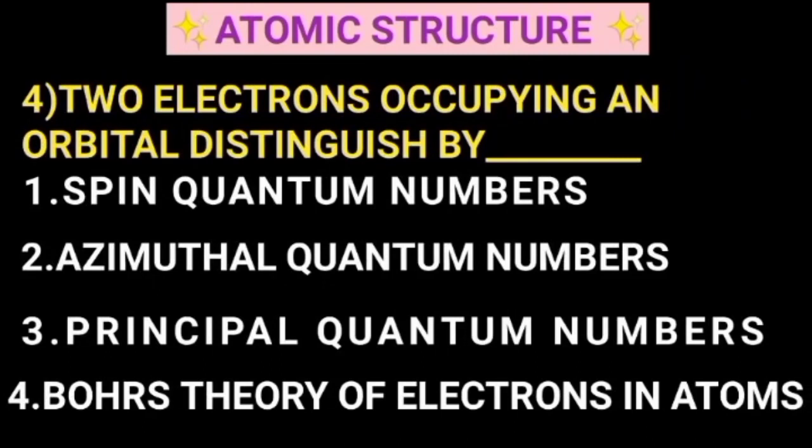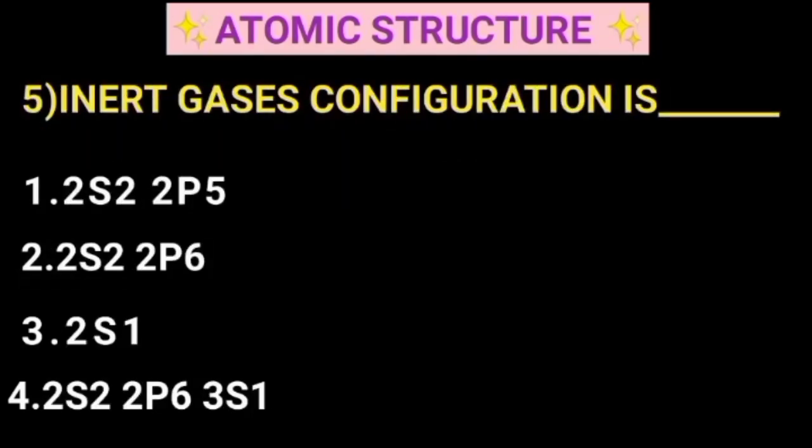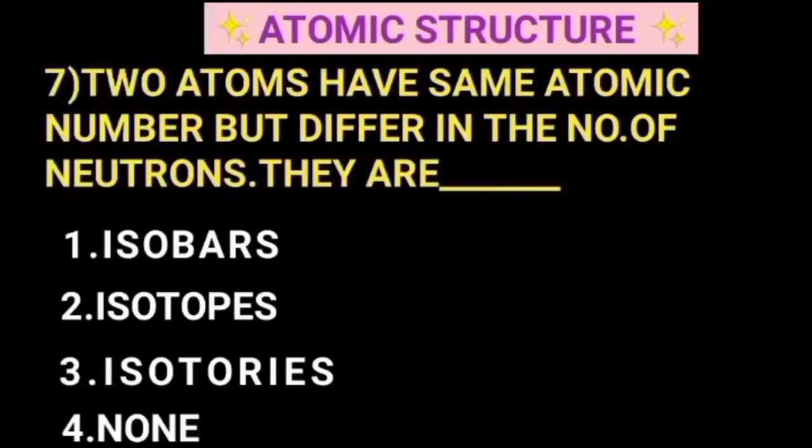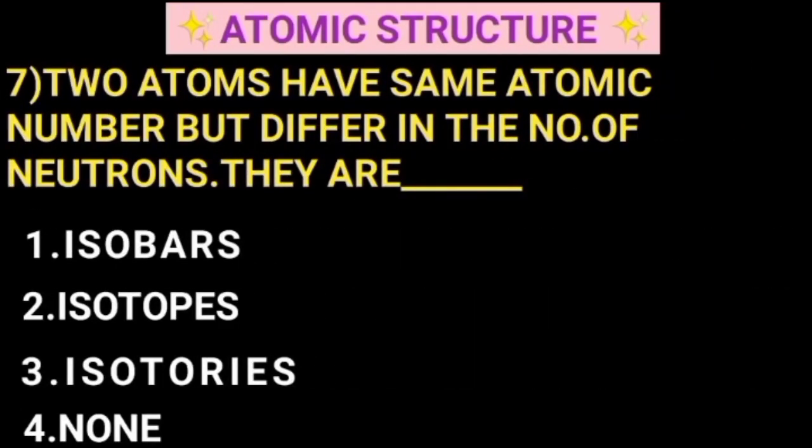Two electrons occupying an orbital distinguished by. The most repeated question of the inert gas configuration is of the following. When electrons jump from 4s to 3d orbital, energy is absorbed, released, unchanged. Two atoms have same atomic numbers but differ in the number of neutrons. They are called isotones. Isobars, isotopes, isotopes or isotones.